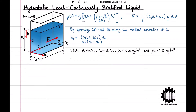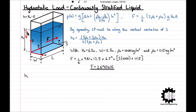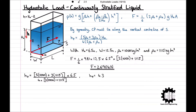With these values, the magnitude of the load F = (1/6) × 9.81 × 12.5 × 6.5² × (2×1000 + 1115) = 2690 kN. The centre of pressure depth h_p = (5×1000 + 3×1115) × 6.5 / [4 × (2×1000 + 1115)] = 4.35 m. Therefore, the hydrostatic load on the vertical end wall is F = 2690 kN, and the centre of pressure is located along the vertical centre line at a depth of 4.35 m.